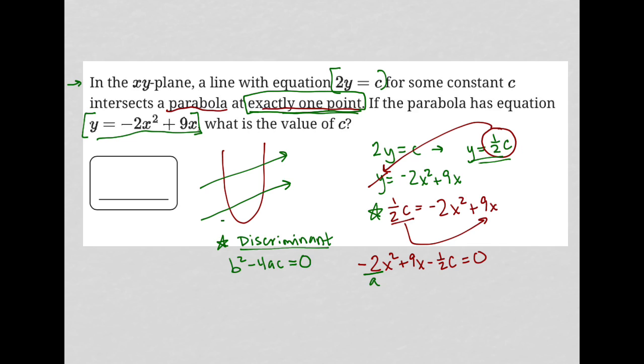So I can replace b² with 81 because 9² is 81, minus 4 times a which is -2, times c which is -½c, all equal to zero. Simplifying this further: -4 times -2 is positive 8, times -½ is -4, so it becomes 81 - 4c = 0. I would add 4c to both sides here, and that leaves me with 81 = 4c.